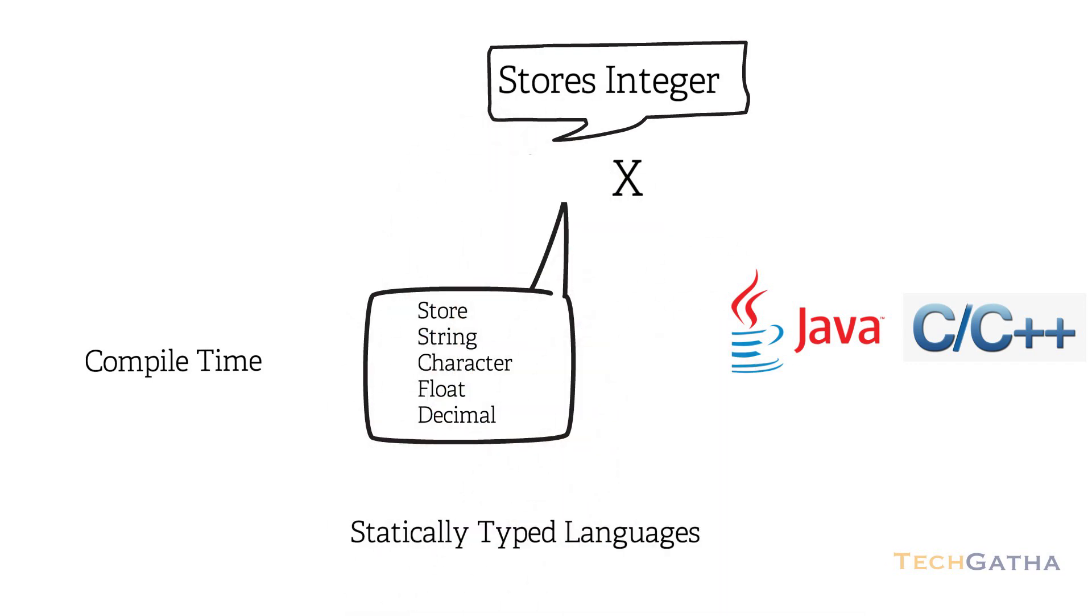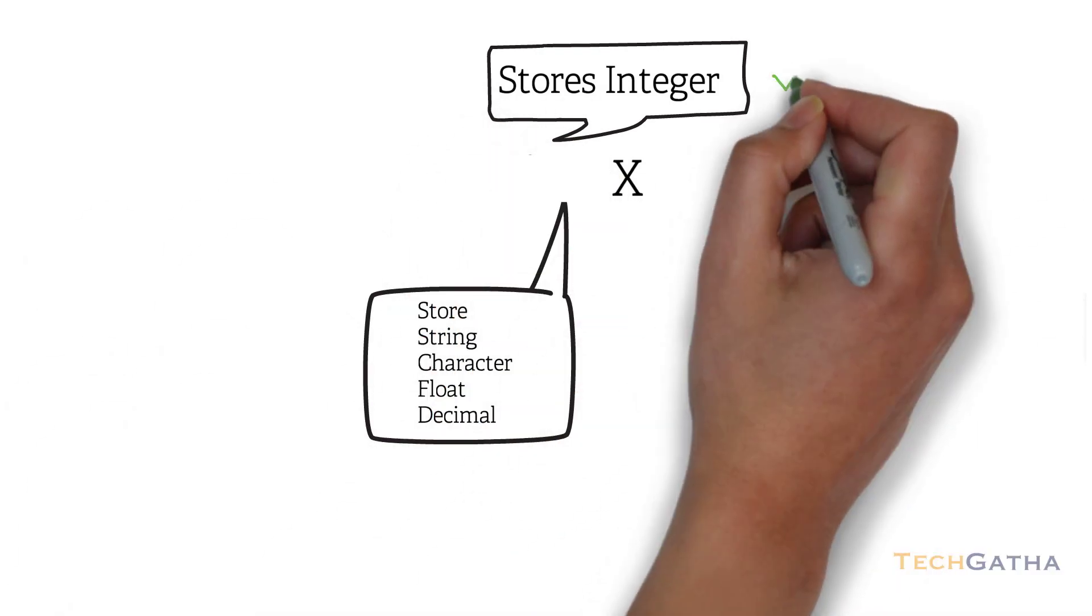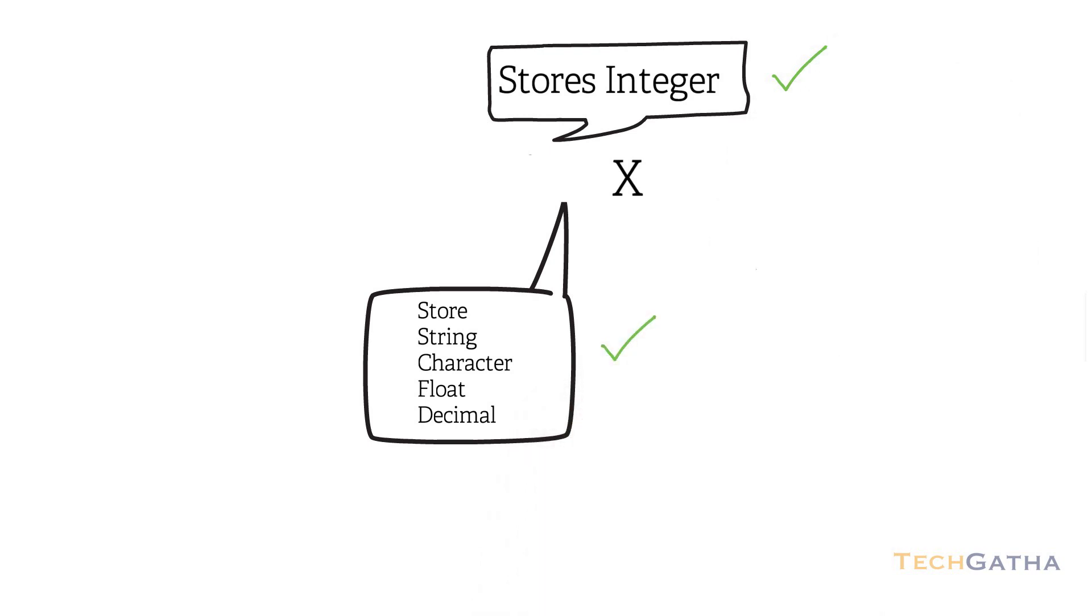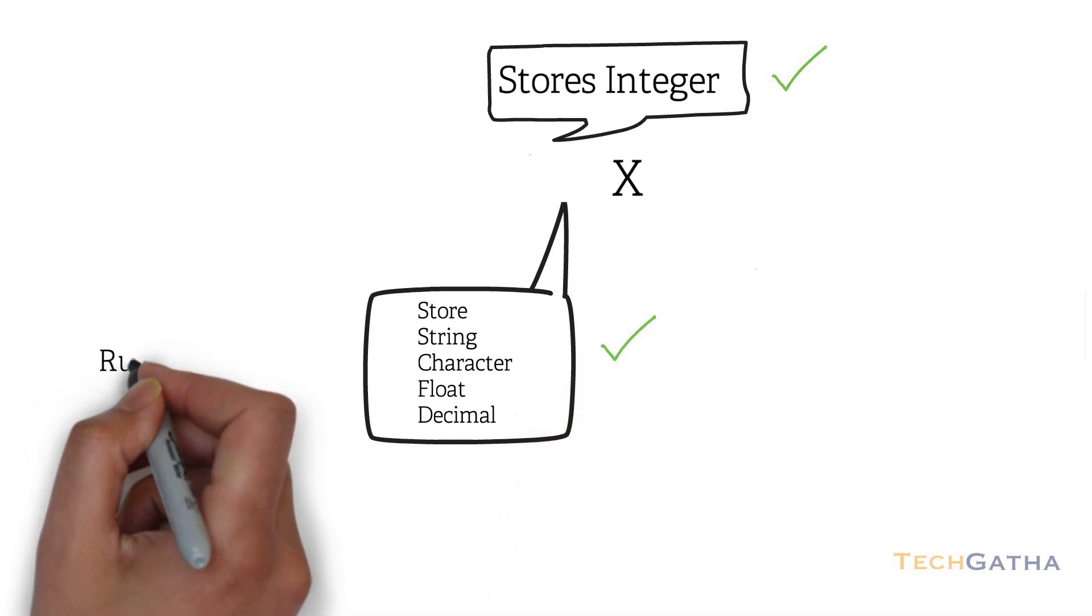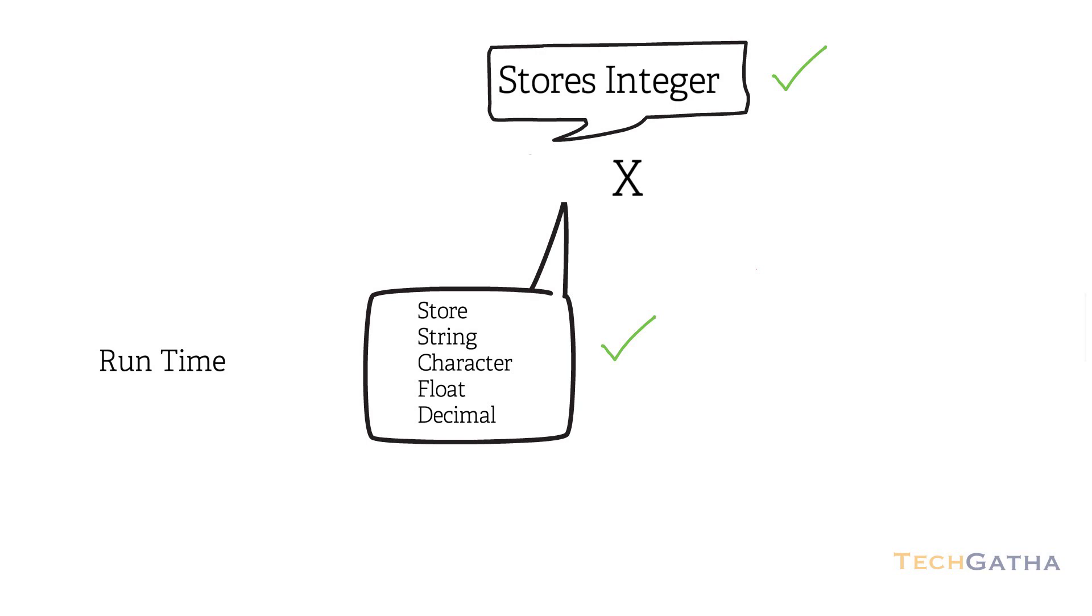If I remove the label int, this variable can then be used to store values of any type. Since the type of variable is identified at runtime, the languages that exhibit this behavior are called dynamically typed languages.